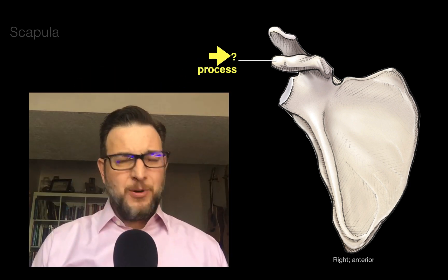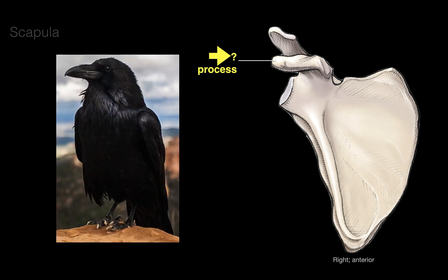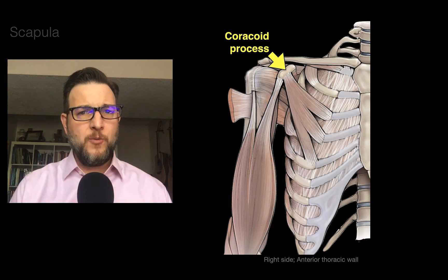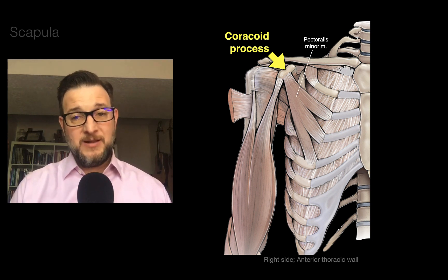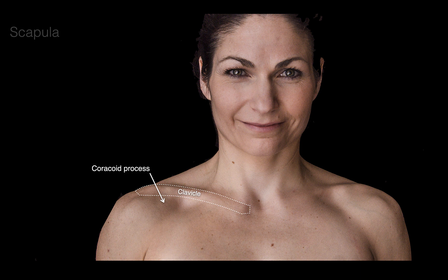What about this process? A process is a bony landmark — a bony projection. Anatomists noted that it kind of looks like a raven's beak or a crow's beak. In Greek, that is 'coracoid,' so they called this the coracoid process. It's important for muscle attachment — three muscles attach here: pectoralis minor, the short head of the biceps brachii, and the coracobrachialis. In surface anatomy, it's a good landmark to palpate — find the clavicle and it's right below the lateral third.